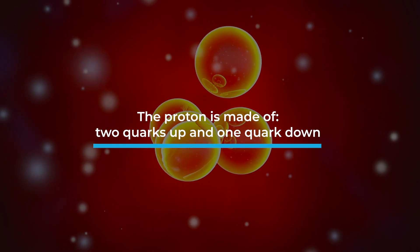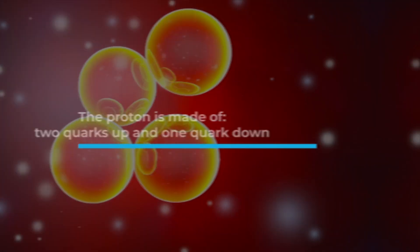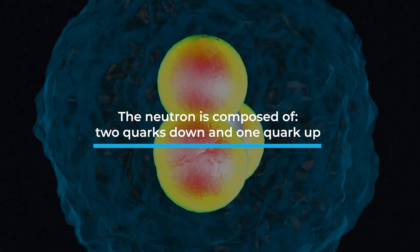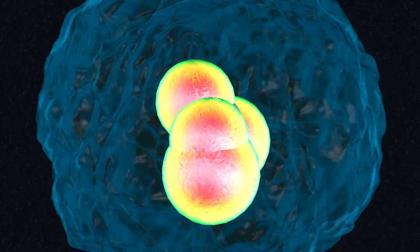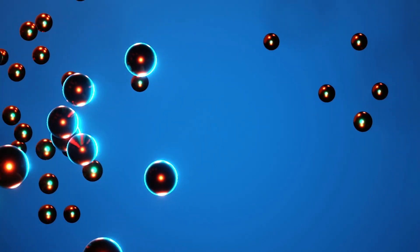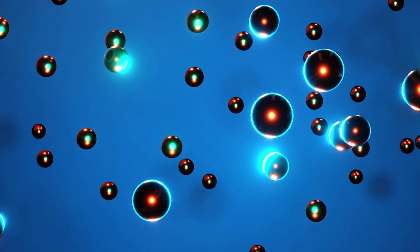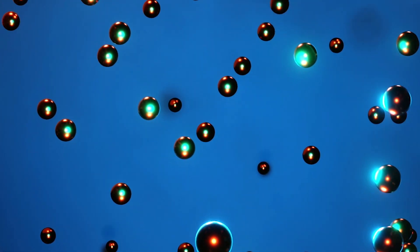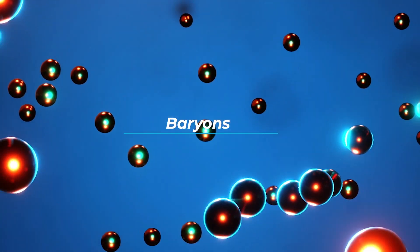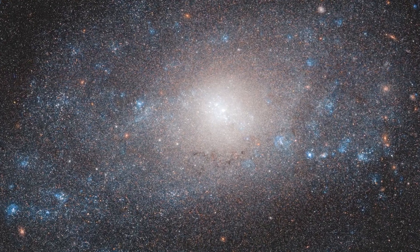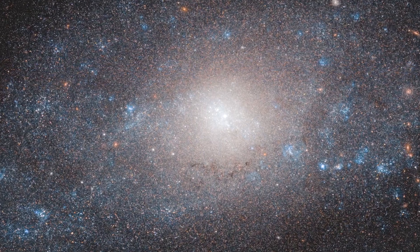These quarks combine in different ways to form the particles of our atoms. The proton is made up of two up quarks and one down quark, whereas the neutron is composed of two down quarks and one up quark. Quarks and electrons are some of the so-called fundamental particles — everything in our world is made out of these tiny objects. We define as hadrons all particles composed of quarks, and if the number of quarks is odd, we call them baryons. What we commonly call matter is everything that is made of baryons.